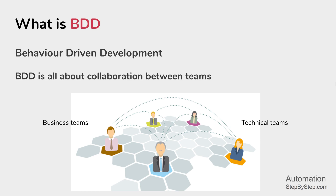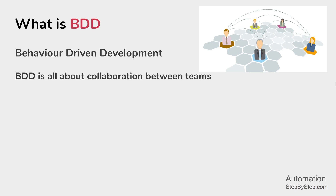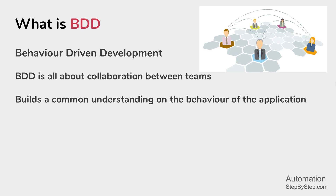In any organization, we have business teams who understand the user scenarios, user modules, and how users interact with the applications. Then we have technical teams where we have developers, testers, and automation engineers who do the implementation. Usually there is a gap between the understanding of business teams and technical teams.